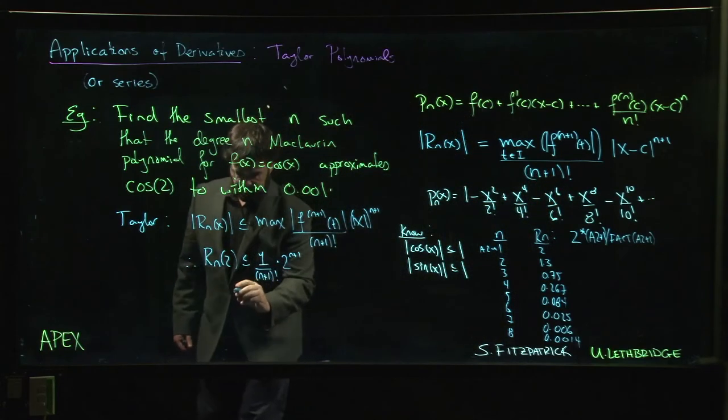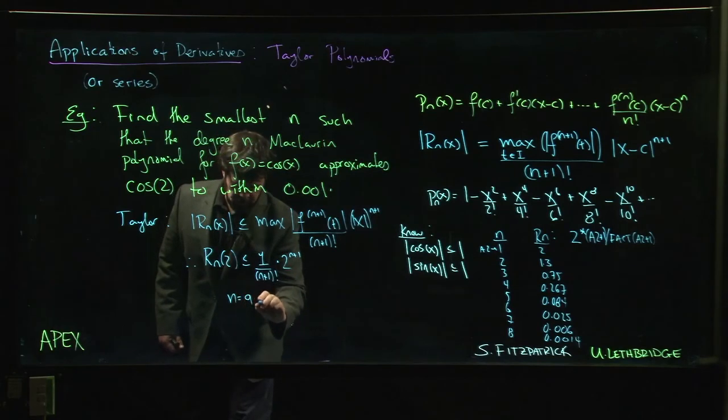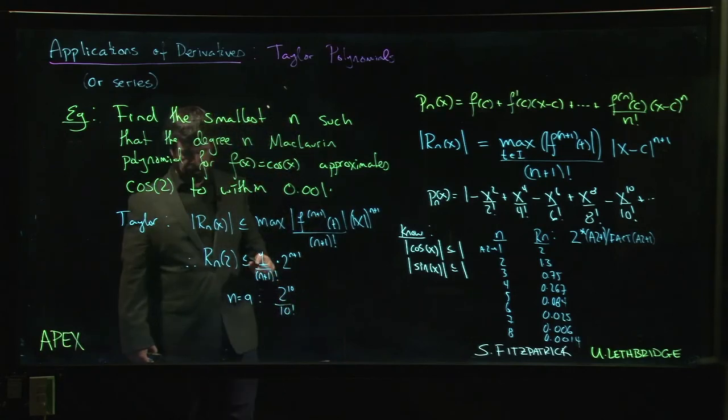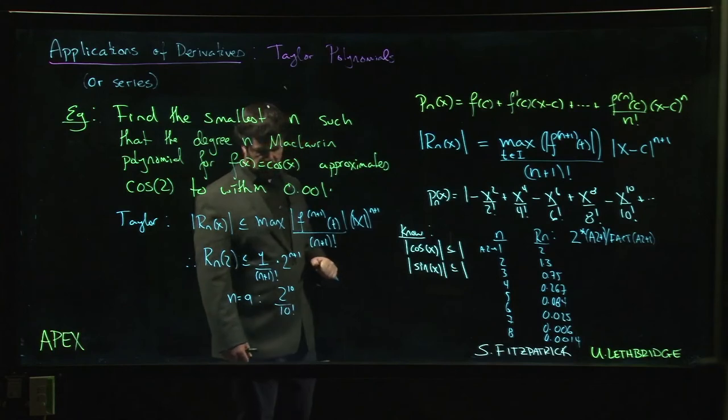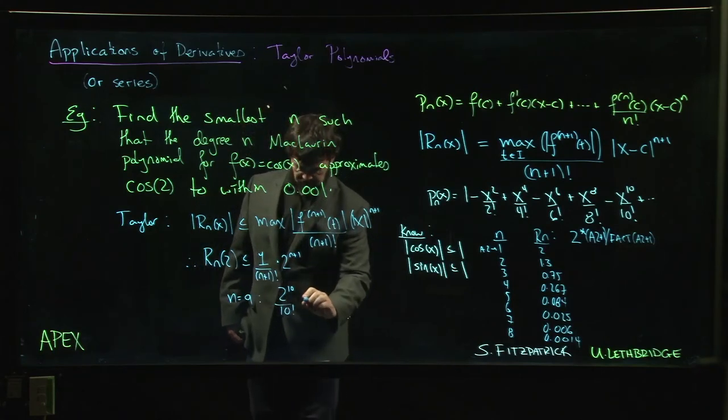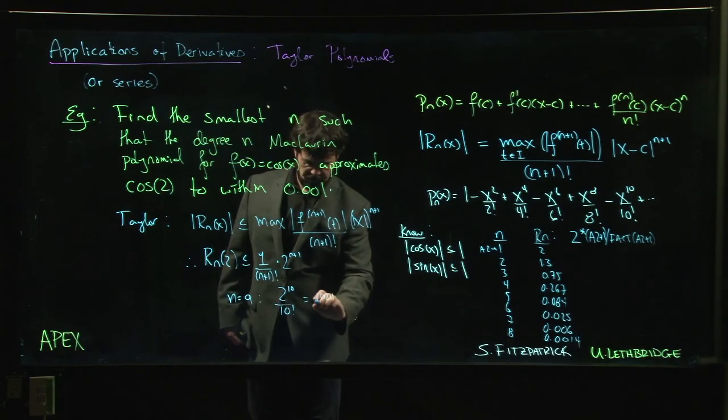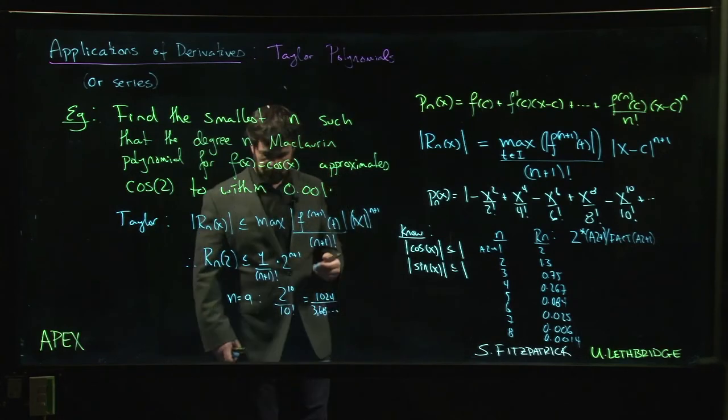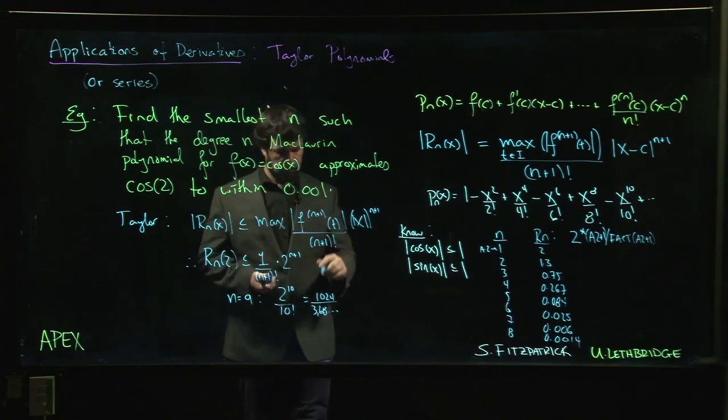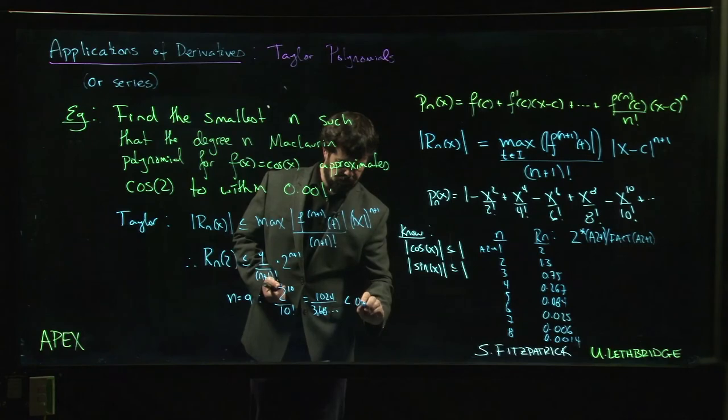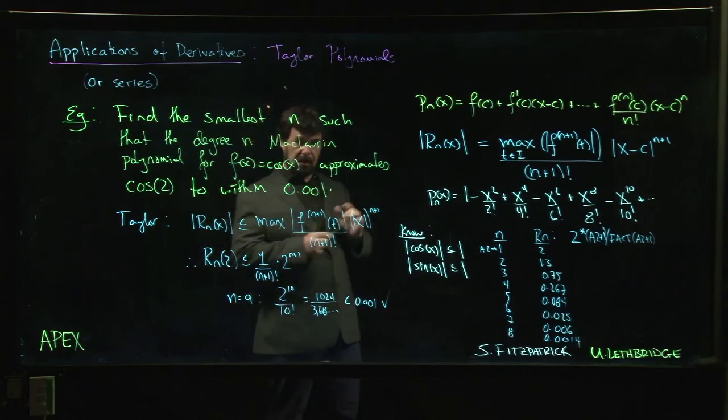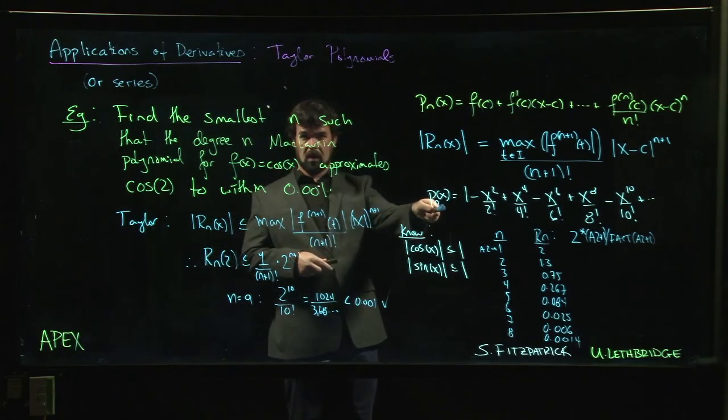So we got n equals 9. And for n equals 9, you get 2 to the 10 over 10 factorial. So 2 to the 10 is 1024. 10 factorial is like 3 million something. And you do get something which is indeed less than 0.001, so you're like yes, I guess I got to go to degree 9.